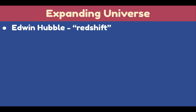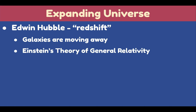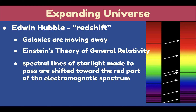In 1929, Edwin Hubble announced his discovery of the redshift and its interpretation that galaxies are moving away from each other — evidence for an expanding universe, as predicted by Einstein's theory of general relativity. He observed that spectral lines of starlight passed through a prism are shifted toward the red part of the electromagnetic spectrum, toward the band of lower frequency, indicating the star or galaxy is moving away from us. Redshift contradicted the previously held view of a static and unchanging universe.